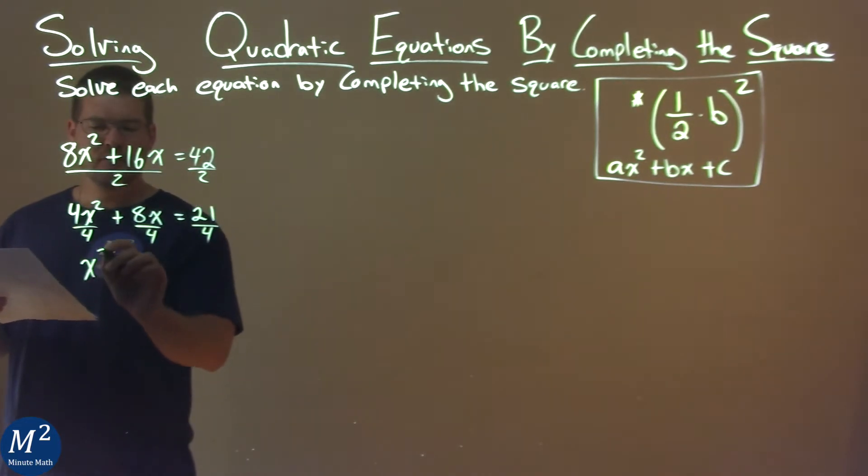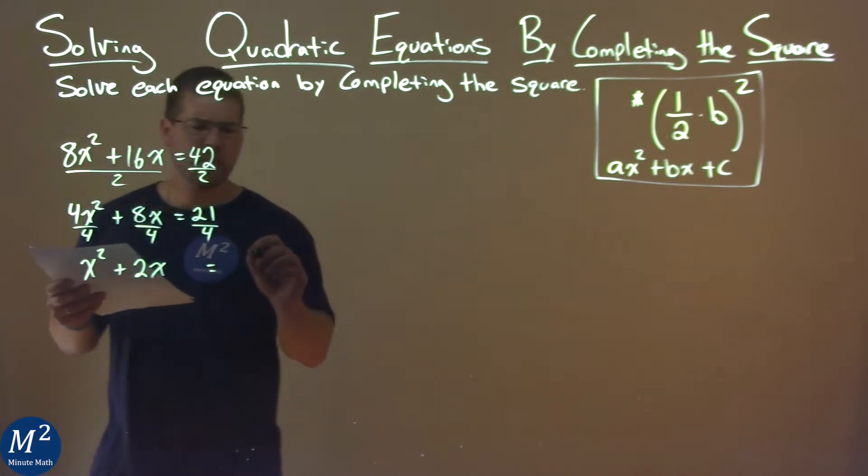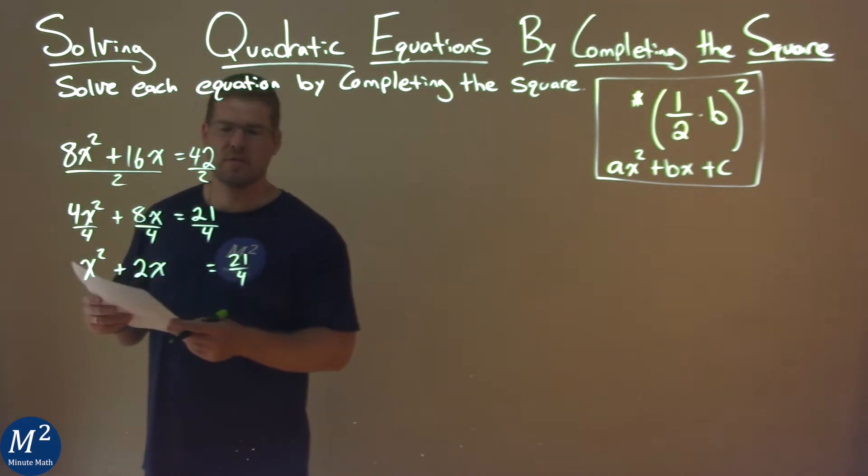And so we're left with x squared plus 2x—8x divided by 4, which is 2x. I'm going to leave a space here, and then 21 over 4. We'll leave it as such.